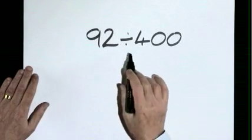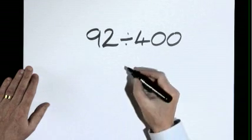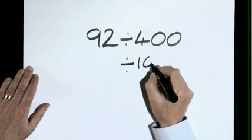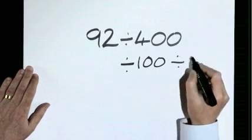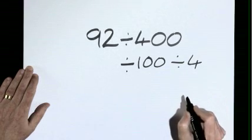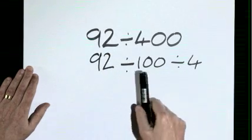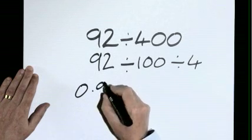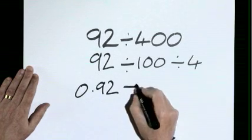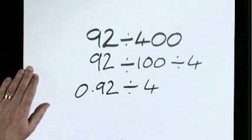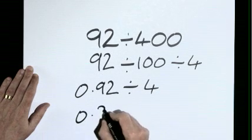92 divided by 400. Instead of dividing by 400, divide by 100 and then divide by 4. We'd get the same answer. 92 divided by 100 is 0.92. Still to divide by 4, 0.23.